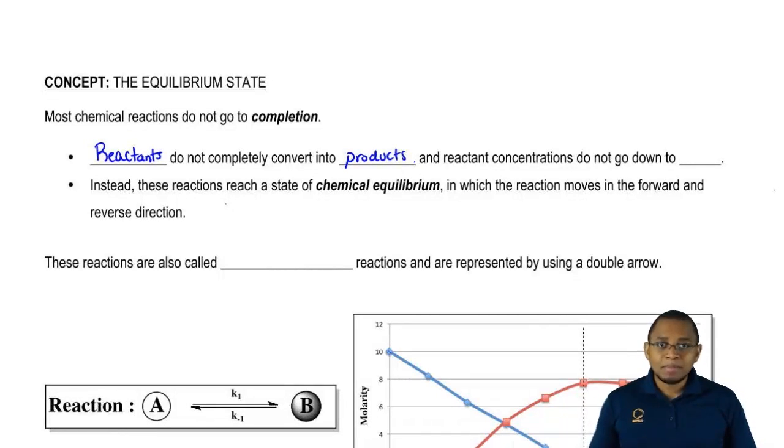So there's always going to be some amount of reactant left. That amount could be very small or very large. It all depends on the chemical reaction. Since our reactant amount is always going to be some amount, we're going to say reaction concentrations do not go down to zero.